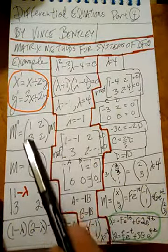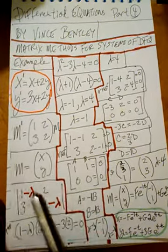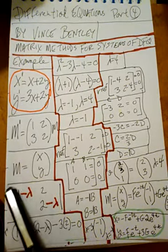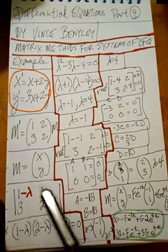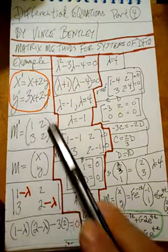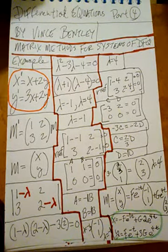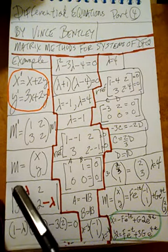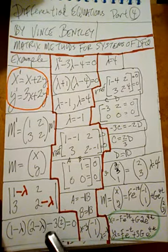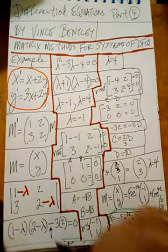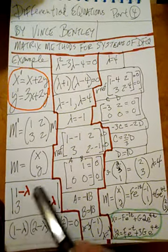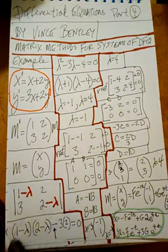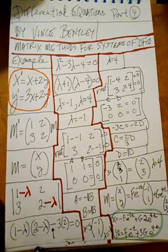The next thing we'll do with this matrix is put a minus lambda along the diagonals only. Then we'll evaluate the determinant — that's what these bars mean. This is not a matrix; the straight lines mean determinant. We evaluate a two-by-two determinant by taking the diagonals, multiplying them, and always subtracting the other diagonal — so this times this minus this times this, which is three times two.